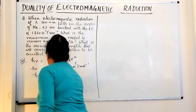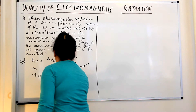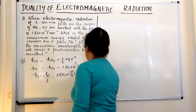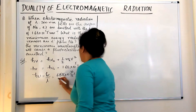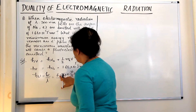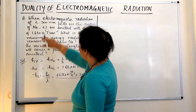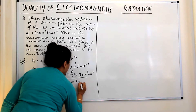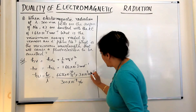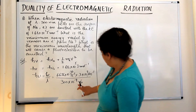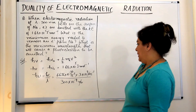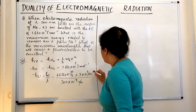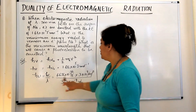So hν = hc/λ, where h = 6.626 × 10⁻³⁴ J·s, the speed of light c = 3 × 10⁸ m/s, and λ = 300 nm = 300 × 10⁻⁹ m. Checking units: meters cancel, and joules·second divided by second leaves energy in joules. This gives us the energy of one photon.